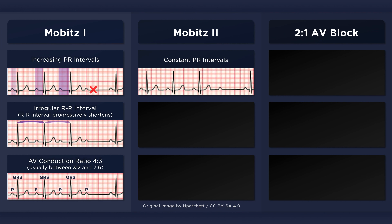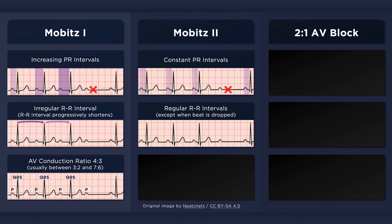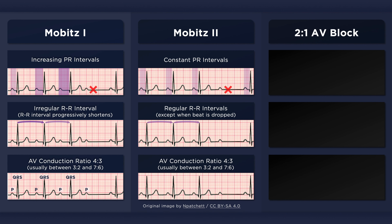Type II second degree AV block is characterized by constant PR intervals and an intermittent failure of the atrial impulse to conduct to the ventricles. Unlike Mobitz I, the PR intervals are consistent between all conducted beats. The RR intervals are constant and the rhythm is regular until a beat is dropped — this can be referred to as a patterned regularity. The ratio of atrial impulses conducted to the ventricles is usually between 3:2 and 7:6, though this ratio can vary between cycles.